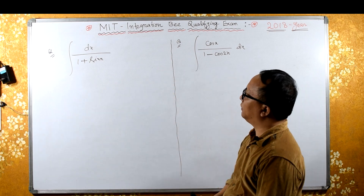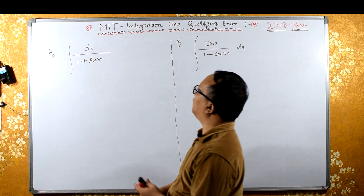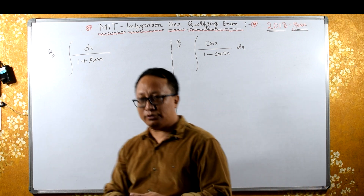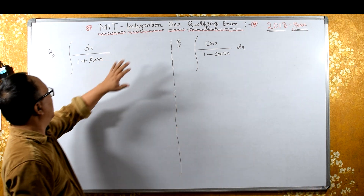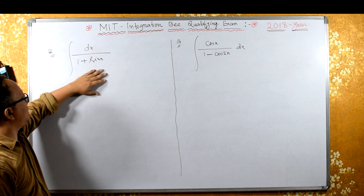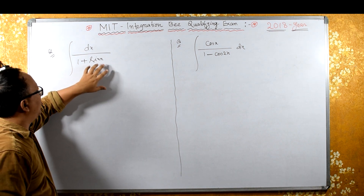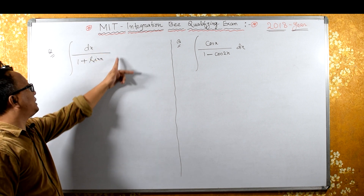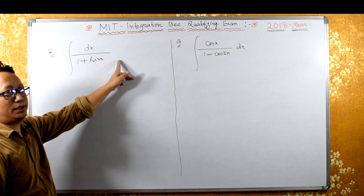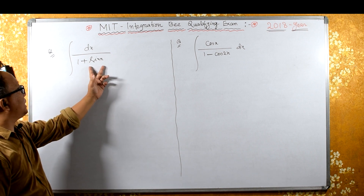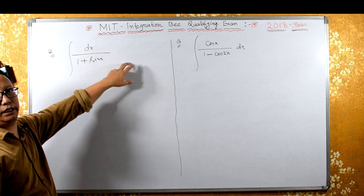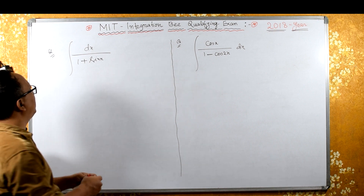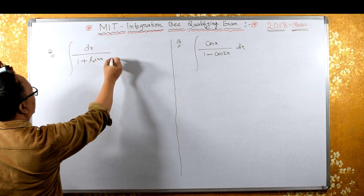These two questions are from the MIT integration qualifying exam 2018. This first one is a simple one — you can rationalize by multiplying by the conjugate (1 + sinx) top and bottom, or you can do a t-substitution with t = tan(x/2), but that's lengthy. Let's solve it quickly by rationalizing.